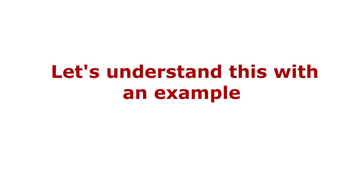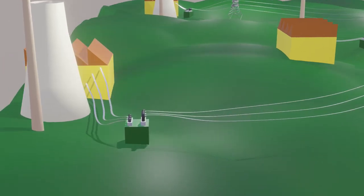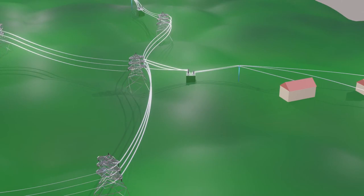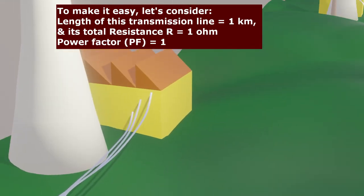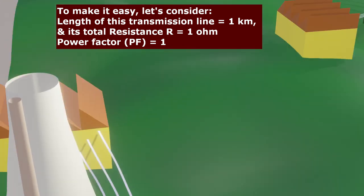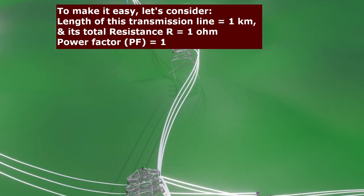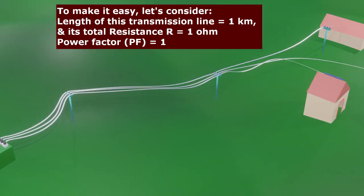This step up and step down of electricity is done to save electric power loss. Let's understand this with an example. This is the consumer area, this is the electricity generation plant, and this is the electricity transmission and distribution line. To make it easy, let's consider the length of this transmission line to be 1 kilometer, its total resistance to be 1 ohm, and let's assume the power factor to be 1.